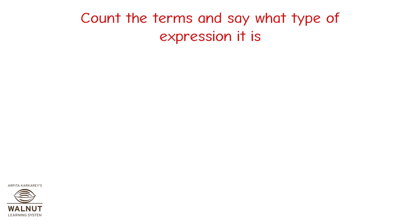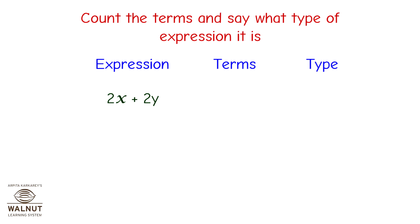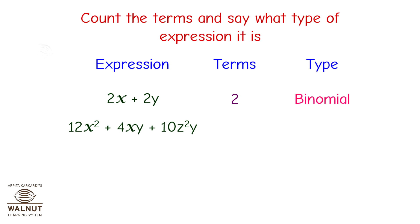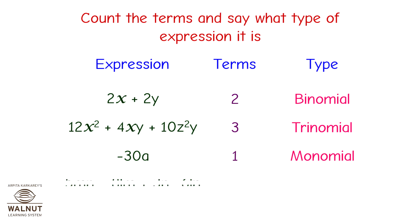Count the terms and say what type of expression it is. 2x + 2y — 2 terms, so it is a binomial. 12x² + 4xy + 10z²y — 3 terms, so it is a trinomial. -30a — 1 term, so it is a monomial. 5mn - 8lm + 3n - 6ln — more than 3 terms, so it is a polynomial.